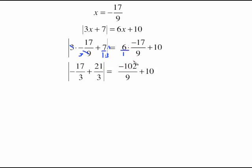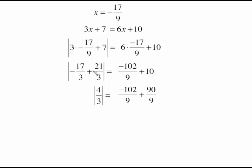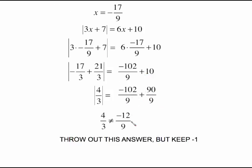On the right side, 6 times negative 17 ninths is negative 102 over 9, plus 10. We need a common denominator of 9, so 10 becomes 90 over 9. Combining gives negative 12 ninths on the right. On the left, negative 17 thirds plus 21 thirds gives 4 thirds; the absolute value of 4 thirds is 4 thirds. But 4 thirds does not equal negative 12 ninths — and even reduced it's still negative, and a positive can never equal a negative. So negative 17 ninths is thrown out; we keep only negative 1.